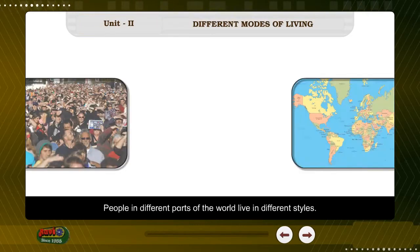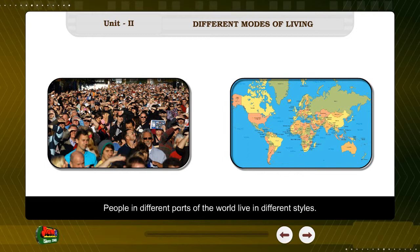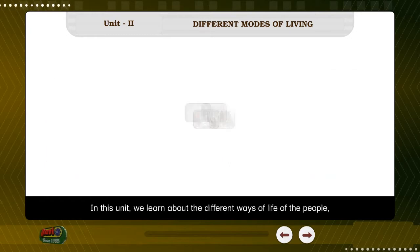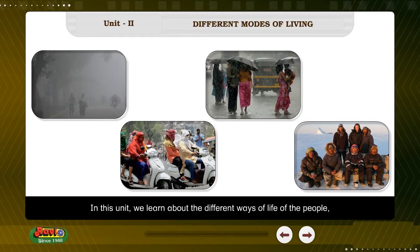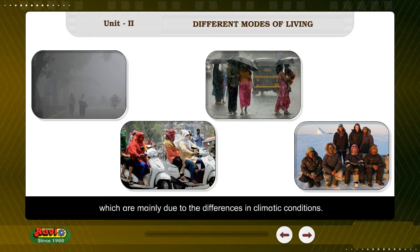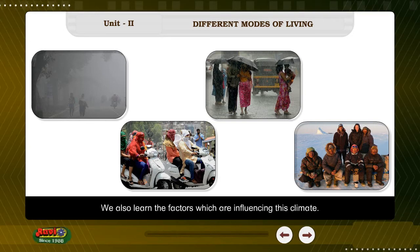Unit 2: Different Modes of Living. People in different parts of the world live in different styles. In this unit, you will learn about the different ways of life of the people, which are mainly due to the differences in climatic conditions. We also learn about the factors which are influencing this climate.